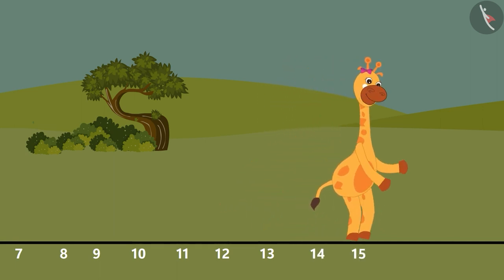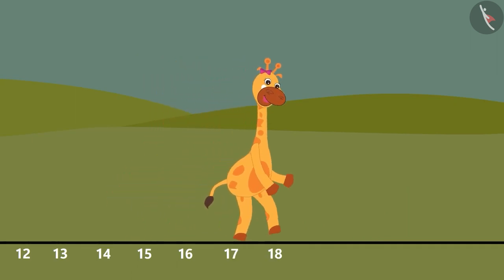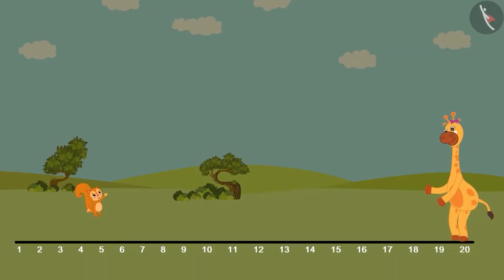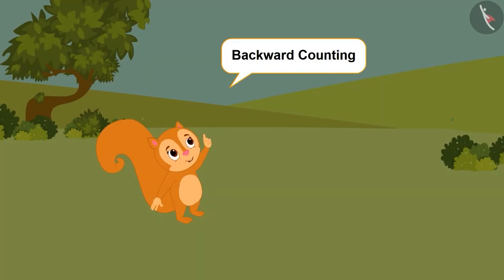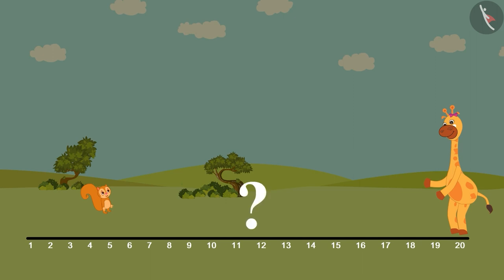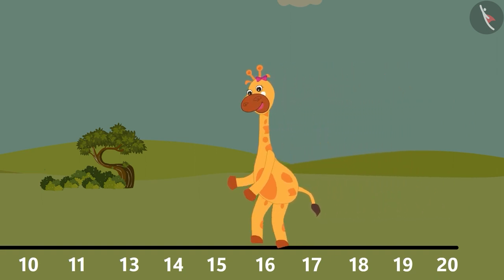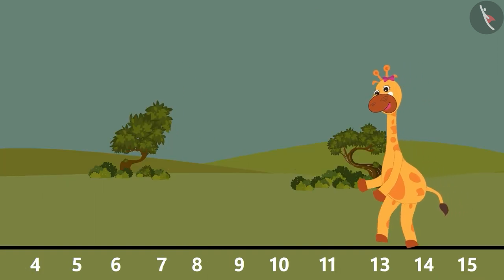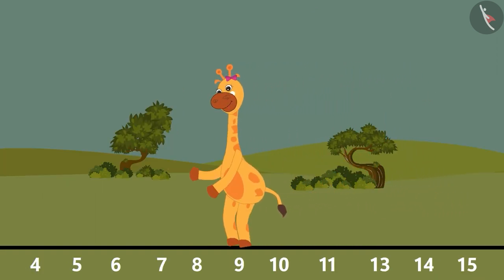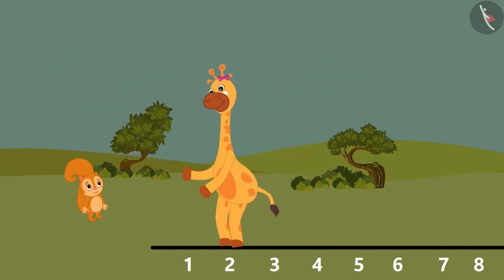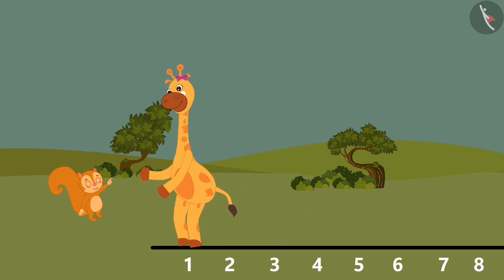Children, will you help Gaffee with backward counting? 20, 19, 18, 17, 16, 15, 14, 13, 11, 10, 9, 8, 7, 6, 5, 4, 3, 2, 1. Gaffee, you skipped a number in the middle.